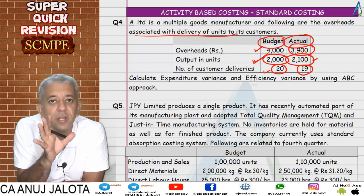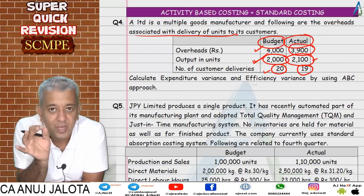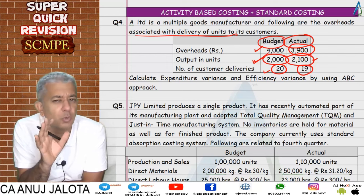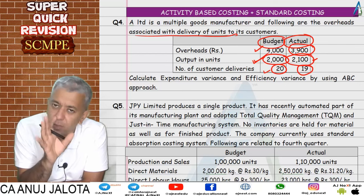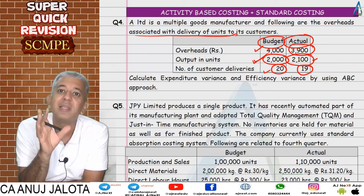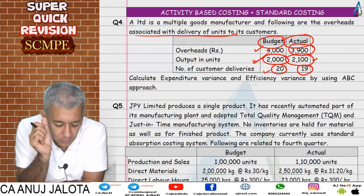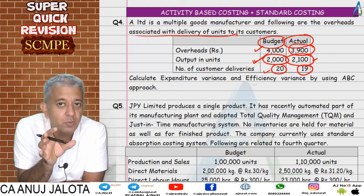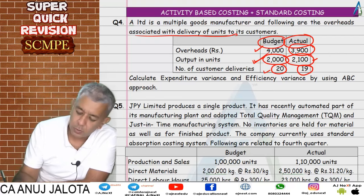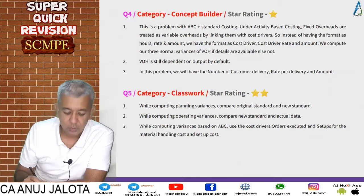In reality there were 19 deliveries; find the actual rate, then prepare revised standard and compute all your variances. The crux of all such questions is identifying the cost driver for each expense — that is very important. From the name of the expense you can usually determine the cost driver, but if not, the question will mention it. This concludes question number five.